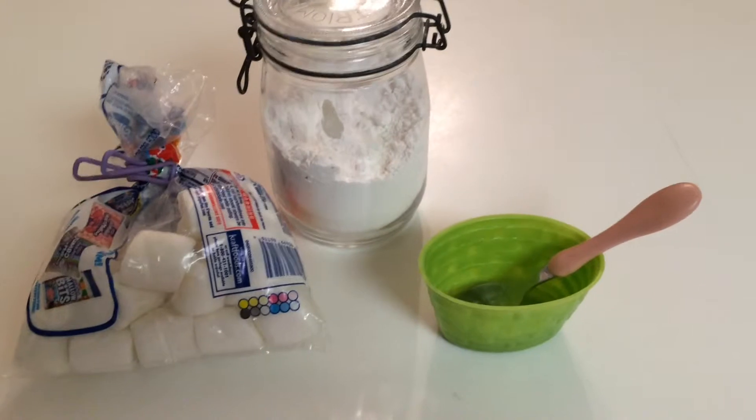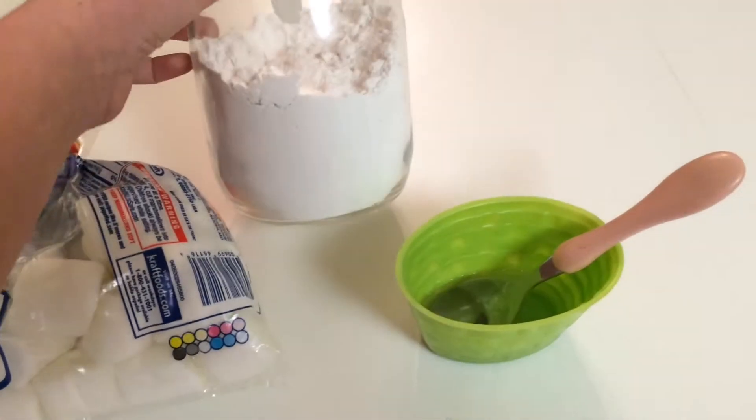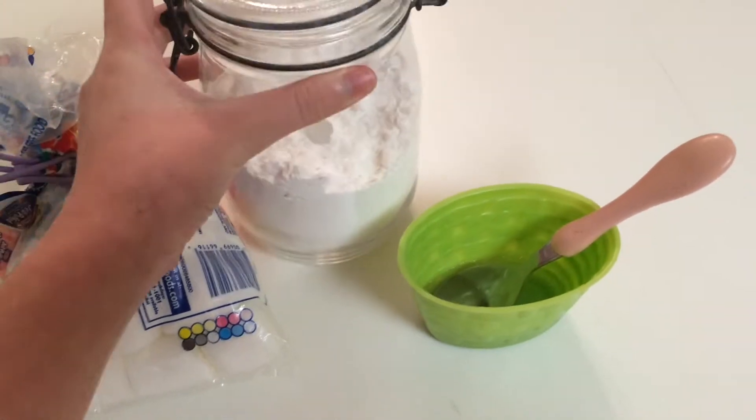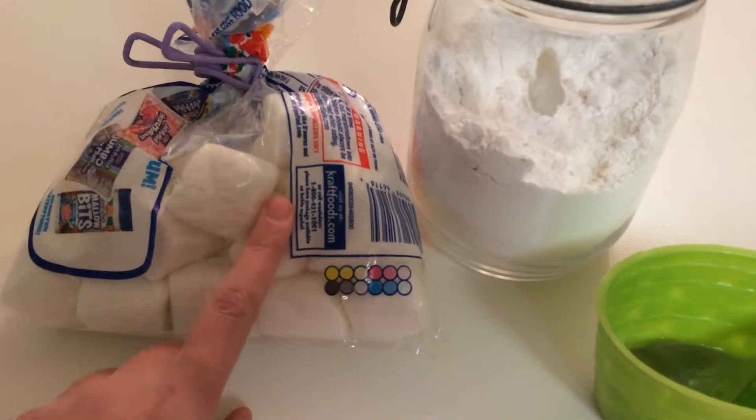You are going to need some marshmallows, preferably jumbo, some powdered sugar, and a bit of water just to moisten the marshmallows because you're going to be microwaving them and stirring them up.